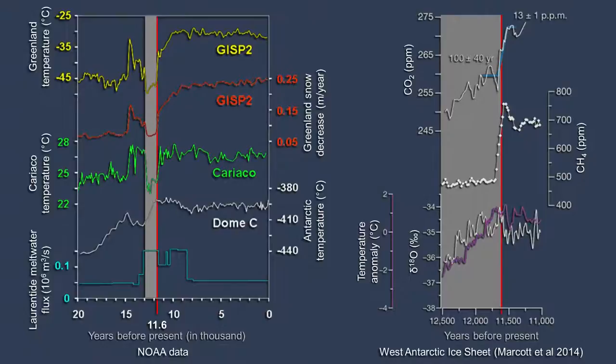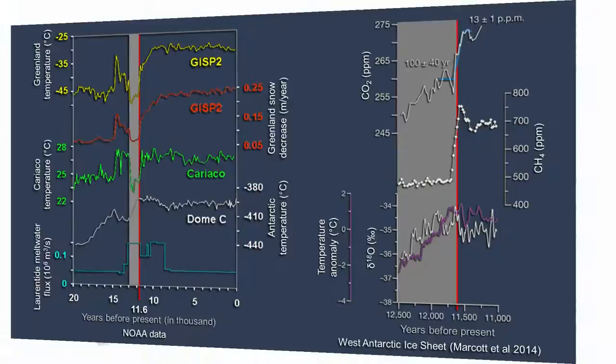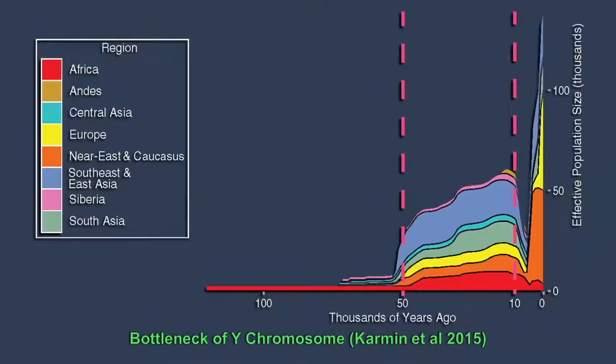The phenomena is also detected from observation data in other places on Earth. On the left graph are observations at Cariaco in Venezuela, in the Antarctic, and the Laurentide meltwater flux in North America. On the right graph are the changing carbon dioxide and methane gas contents observed in the West Antarctic ice sheet. A study by Carmen et al. in 2015 shows a graph of the Y chromosome distribution against time. There was a sharp decline of population that began at the end of Younger Dryas. It seems that there was a population shift from Southeast and South Asia to Europe, Near East, and Caucasus.